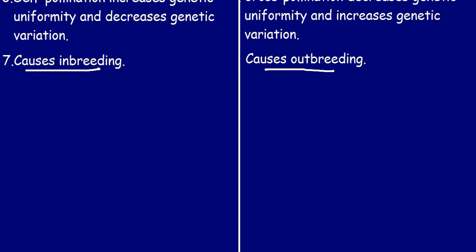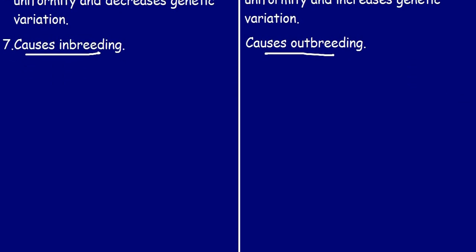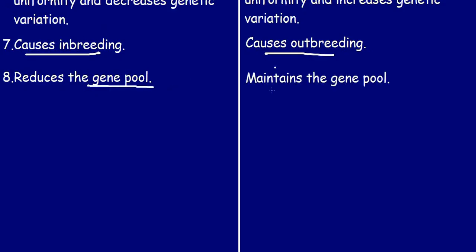The eighth point: self-pollination reduces the gene pool, while cross-pollination maintains the gene pool.